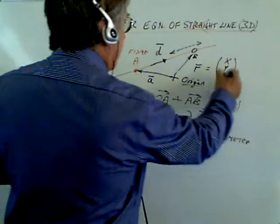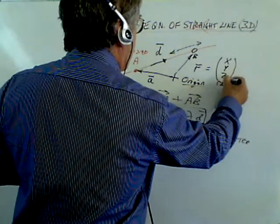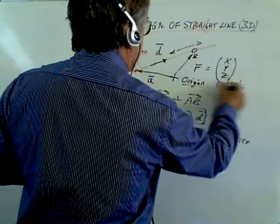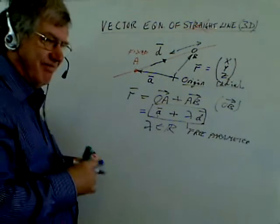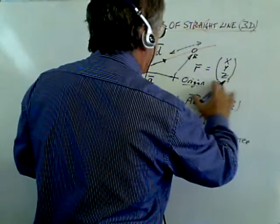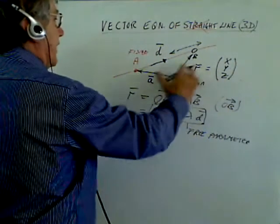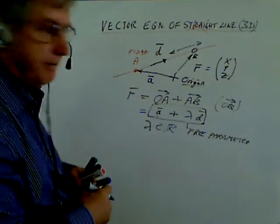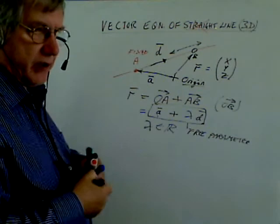We normally call r the radial vector, but it's more to do with circles and such like. So r is the position vector of this moving point. And that is the equation of a straight line.